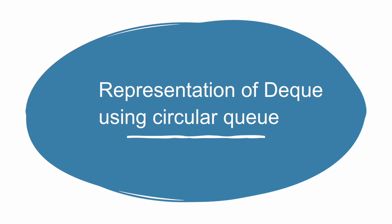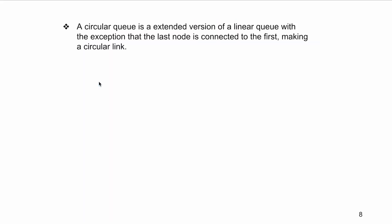Moving on to the representation of DQ using circular queue. A circular queue is an extended version of a linear queue with the exception that the last node is connected to the first, making a circular link.